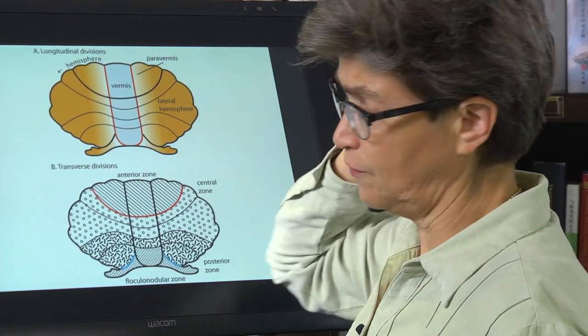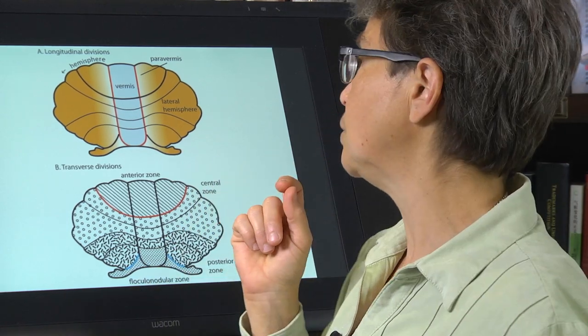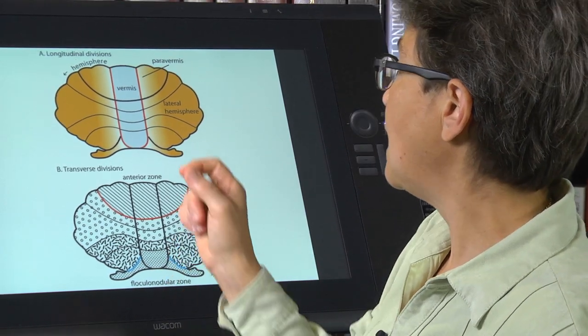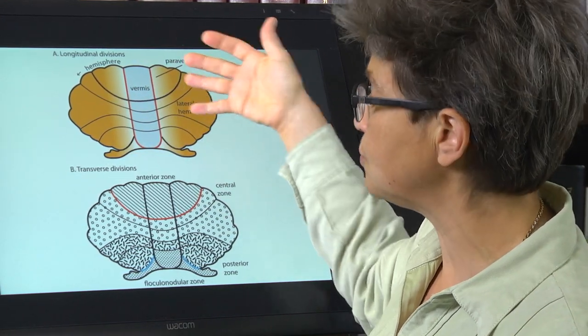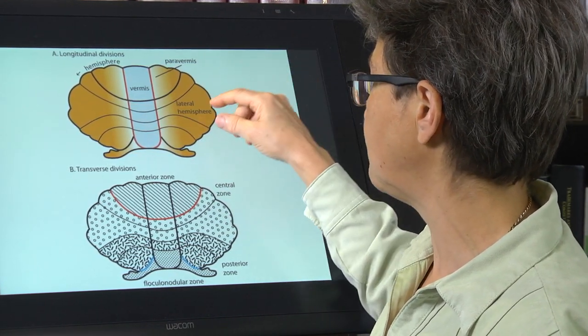The central portion of the cerebellum is called the vermis, and then there are two hemispheres or lobes. These are called lobes or hemispheres, cerebellar lobes, cerebellar hemispheres.